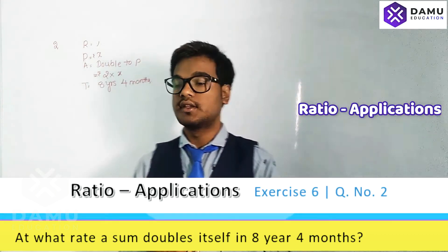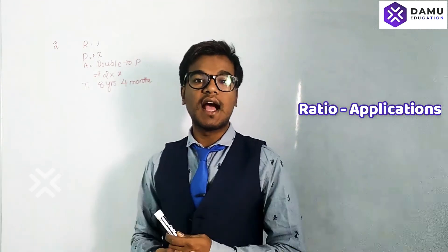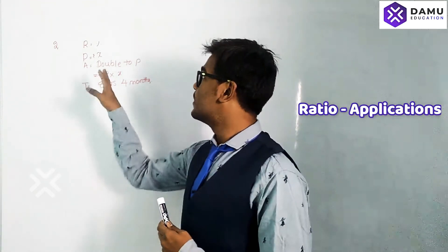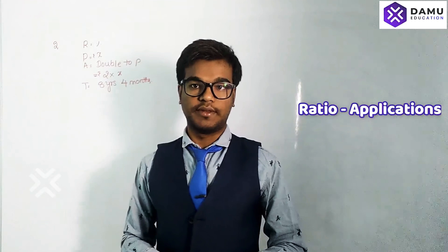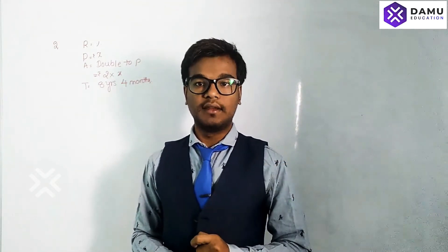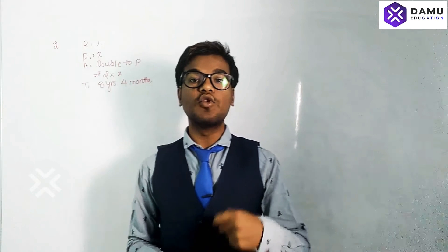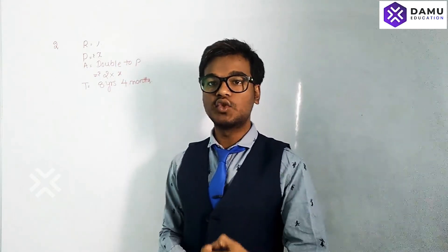After investing some amount, let's take that amount as the principal P. The principal will be X rupees and the amount will be 2X rupees, because it's going to double. For that we have to multiply that X rupees, the principal value, by 2.